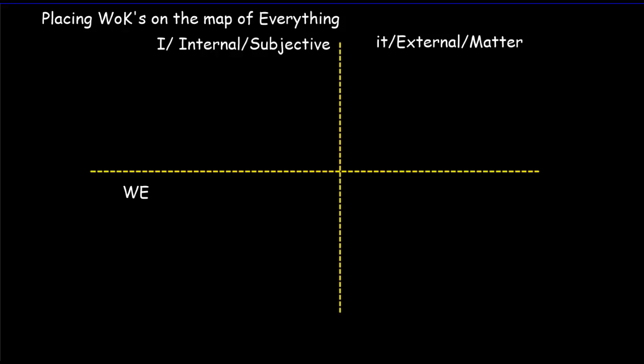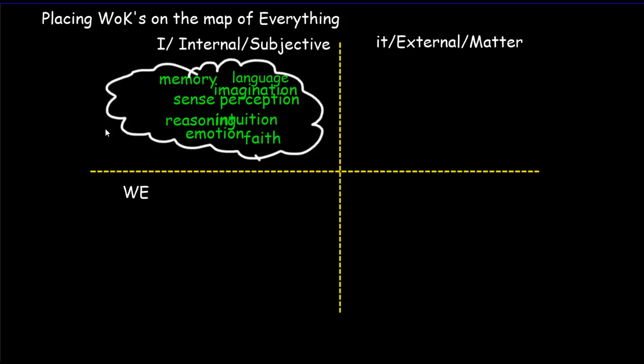What we're going to try to do now is take our eight different ways of knowing and plot them onto a map of everything. Now, there's a sense in which this is very, very simple because everything that we come to know or become conscious of, we can only become conscious of something in the internal realm. Now, and that means that our eight different ways of knowing ultimately belong in this I quadrant in the top left corner.